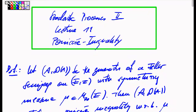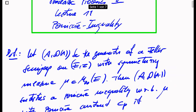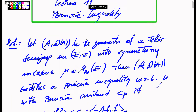Welcome to lecture 11 in our second semester class on stochastic processes. Today we want to introduce the Poincaré inequality to the study of stochastic processes. The Poincaré inequality is a known inequality used in PDE theory and also in analysis of geometric spaces in general, and we want to discuss its significance in the context of stochastic processes.